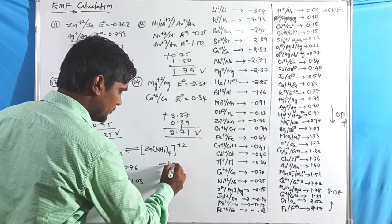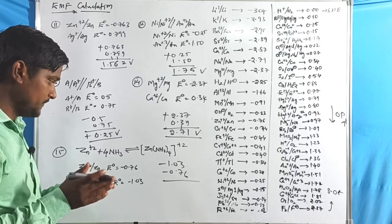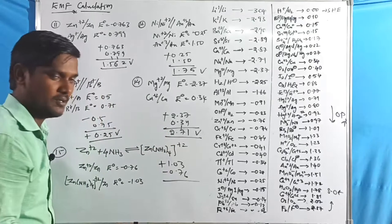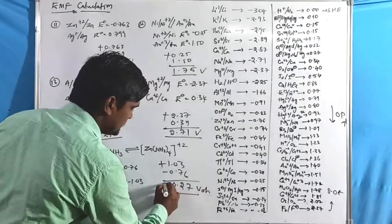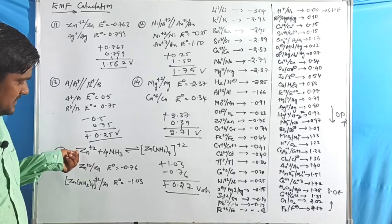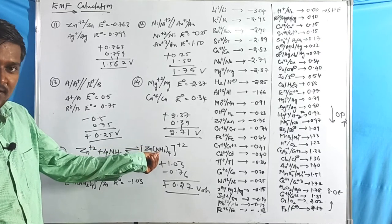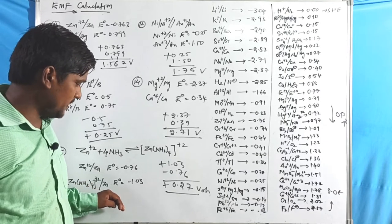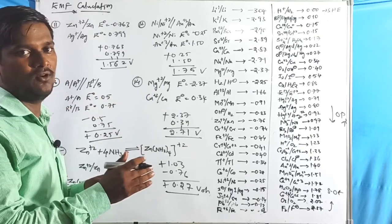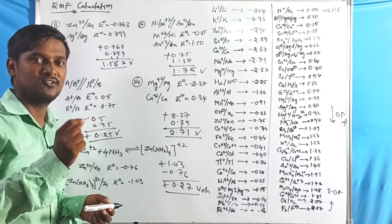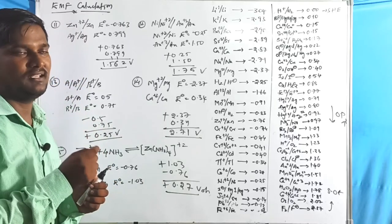Final problem: two negative values −1.03 and −0.76. The more negative (−1.03) is on top (anode). Change the sign of the top electrode. Result: 1.03 − 0.76 = 0.27 volts (positive). Here, Zn(NH₃)₄²⁺ undergoes oxidation (acts as anode) and Zn²⁺ undergoes reduction (cathode). We change the anodic value's sign to get the oxidation potential, then add it to the reduction potential of the cathode to get the EMF.